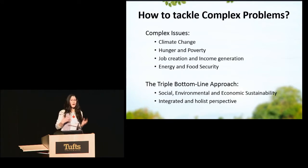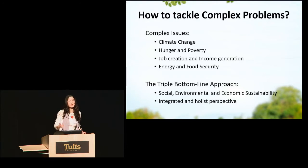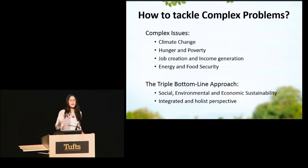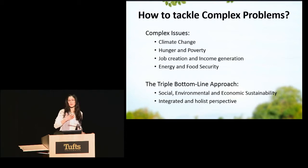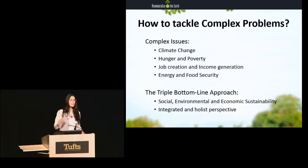One of the things that I think all of us here in this room and also beyond us are puzzling ourselves with is how to tackle complex problems. How do we recover biodiversity? How do we stabilise climate? How do we create jobs? How do we alleviate poverty? How do we produce enough food of good quality to feed the world today and 50 and 100 years from now? One of the things that's very interesting to me is the approach known for a couple of decades now as the triple bottom line approach.